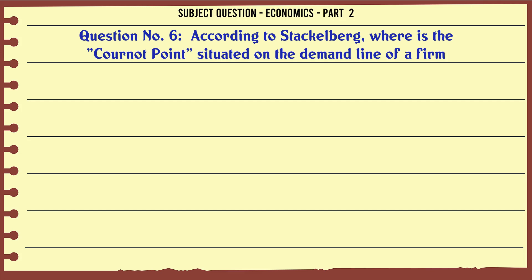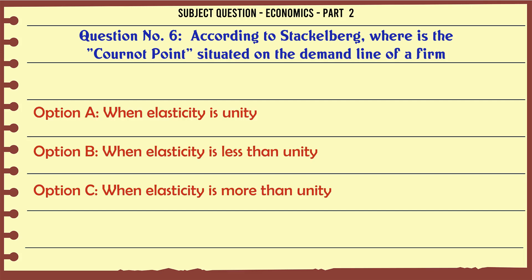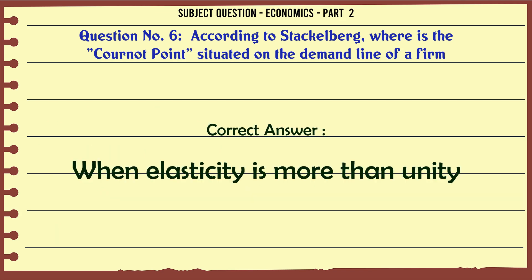According to Stackelberg, where is the Cournot point situated on the demand line of a firm? A. When elasticity is unity. B. When elasticity is less than unity. C. When elasticity is more than unity. D. Anywhere on the demand line. The correct answer is: When elasticity is more than unity.